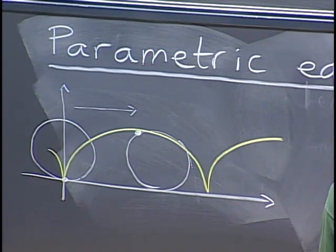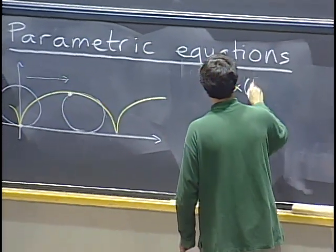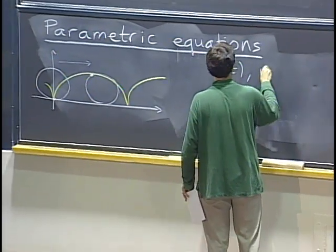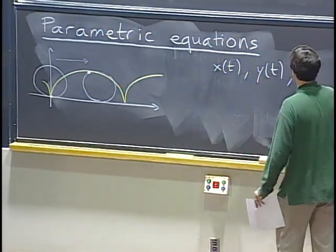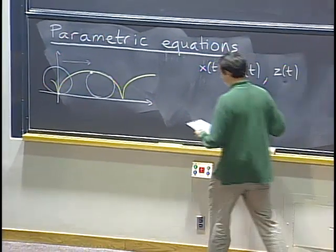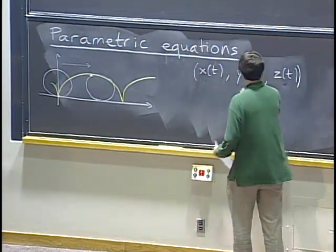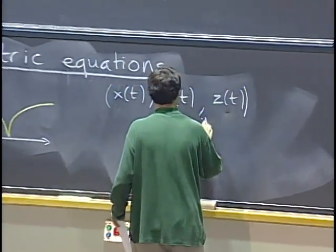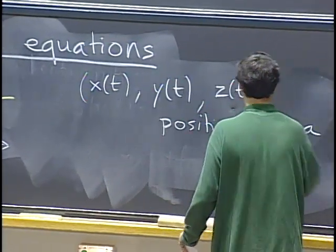In general, we are trying to find the position — x of t, y of t, maybe z of t if we are in space — of a moving point.